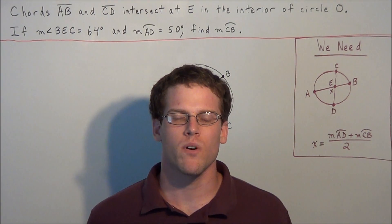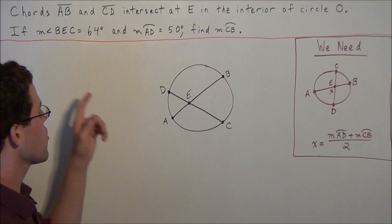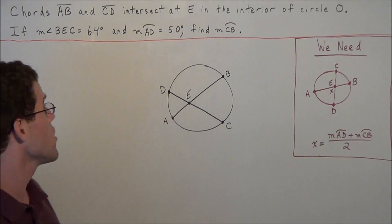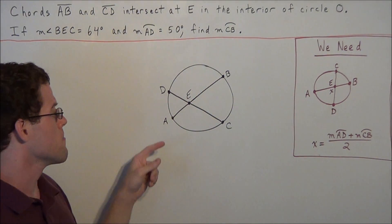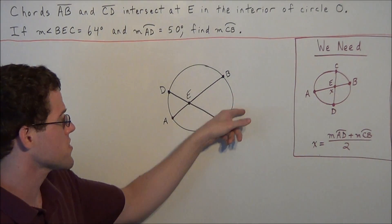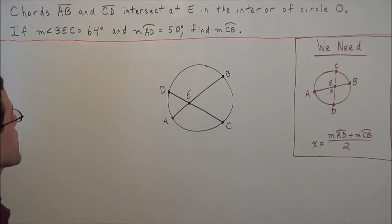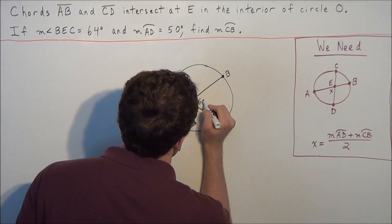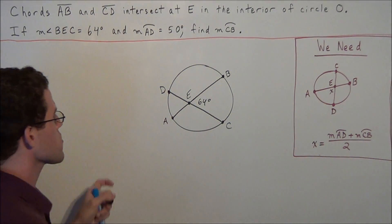Hi, my name is Vincent and today I want to take a look at angles formed by intersecting chords. We have the problem: chords AB and CD intersect at E in the interior of circle O. If the measure of angle BEC equals 64 degrees and the measure of arc AD equals 50 degrees, we need to find the measure of arc CB. So the first thing we could do is label all the information that was given to us — angle BEC equals 64 degrees and arc AD equals 50 degrees.